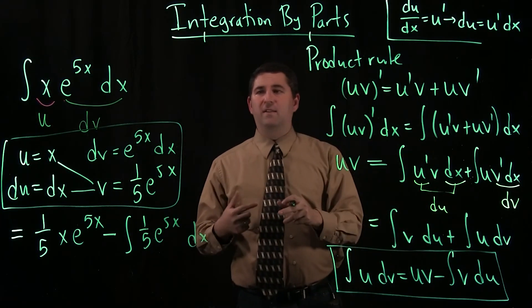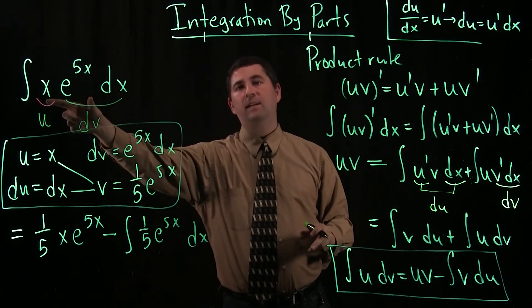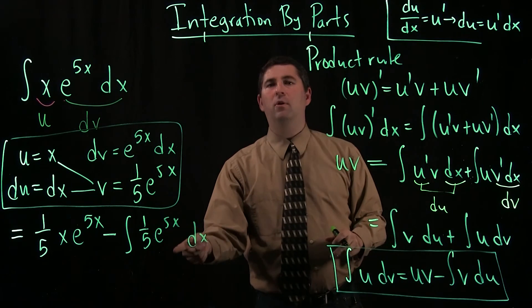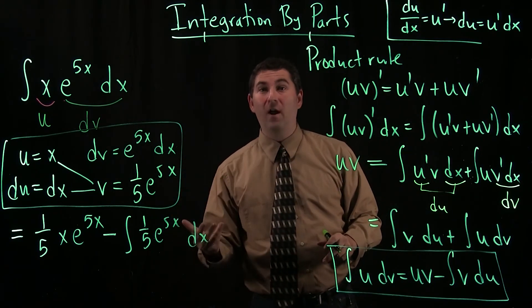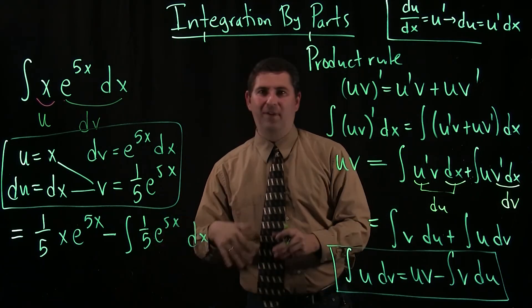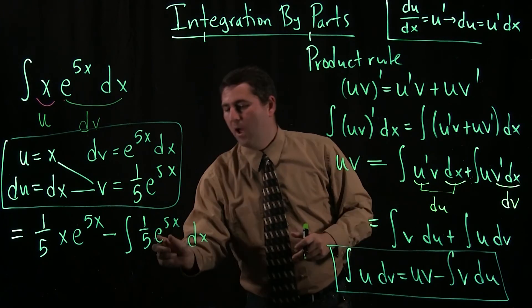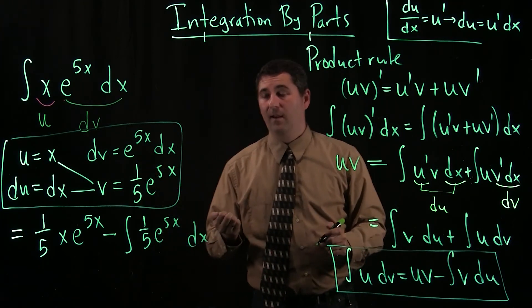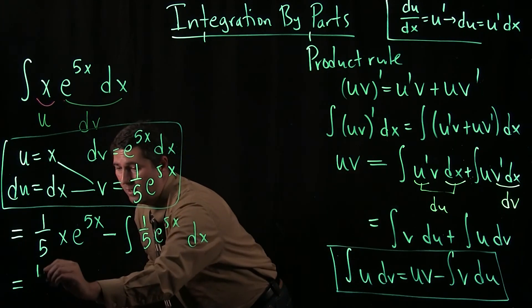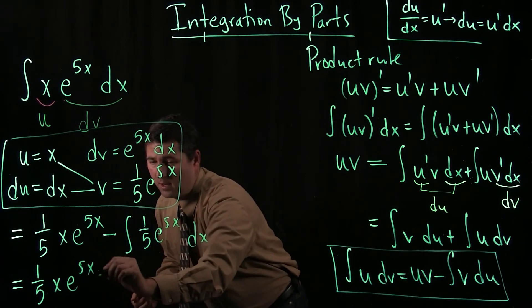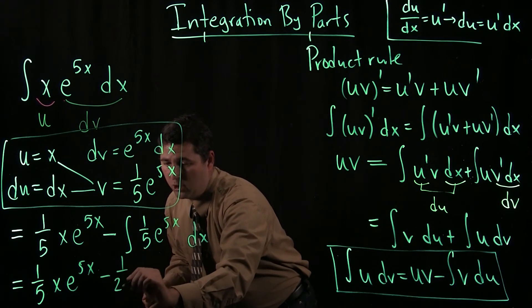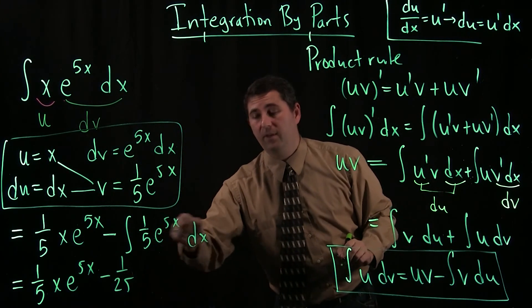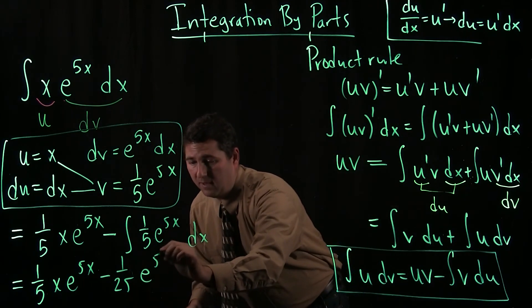And so, what I've done is I've replaced an antiderivative I didn't know with some junk minus an antiderivative that, well, actually, I do know this one. Alright, the x is gone. All I have left is this 1 fifth, and we can pull constants out, right? All I have really is this e to the 5x. And we already found an antiderivative of that. So, I can finish this quickly as 1 fifth x e to the 5x minus 1 twenty-fifth, alright? 1 fifth came from here, and I have another 1 fifth there.